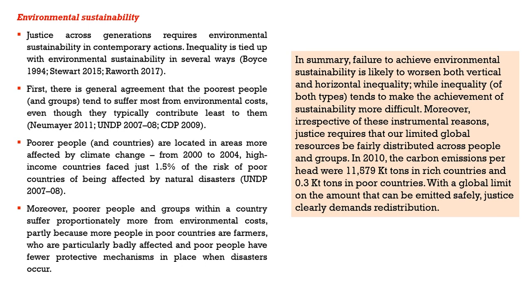In summary, failure to achieve environmental sustainability is likely to worsen both horizontal and vertical inequality, while inequality tends to make the achievement of sustainability more difficult. Justice requires that our limited global resources be fairly distributed across people and groups. Some estimates show that in 2010, carbon emissions per head were 11,579 kilotons in rich countries and 0.3 kilotons in poor countries, with a global limit on the amount that can be safely emitted. Justice clearly demands redistribution. The idea of social justice with respect to carbon emissions — who are the emitters and who are the victims — requires an understanding of horizontal inequality and development ethics.